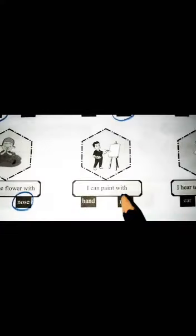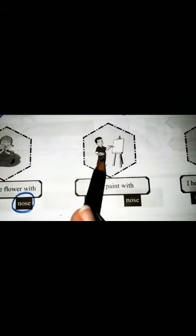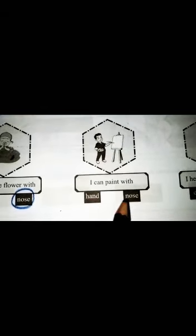Now come to fifth picture. I can paint with hand or nose. He is a boy and he paints with his hand or with his nose. Look, he is using his hand. So circle the hand.